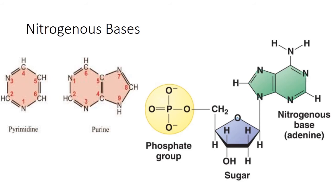When the phosphate group is not present, the molecule is called a nucleoside; with the phosphate group, it is called a nucleotide. Looking at a nucleotide, we have nitrogenous bases — purines and pyrimidines. Purines are further divided into adenine and guanine.